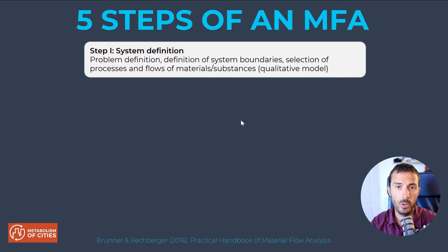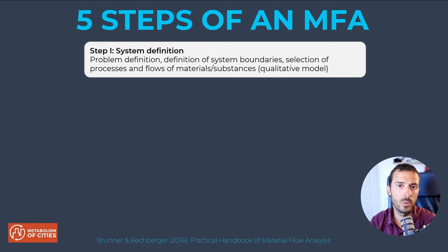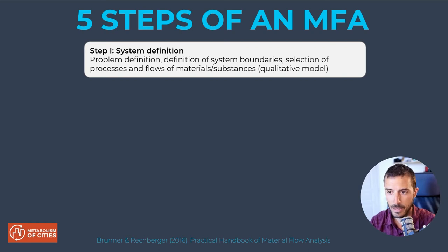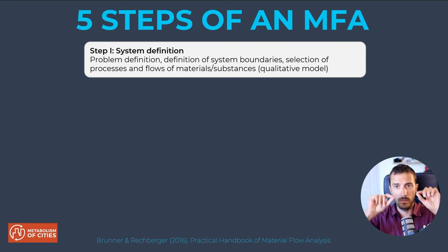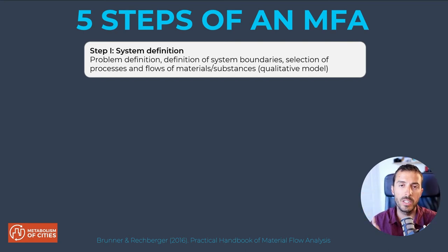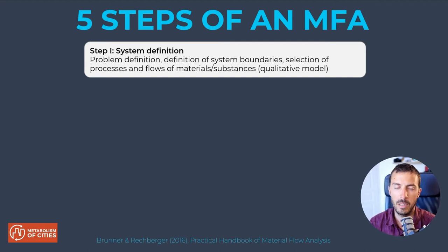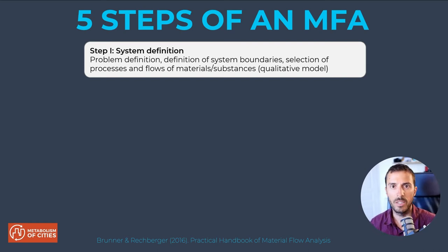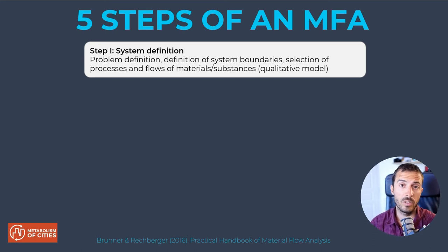The first step is defining the system you want to analyze. When you do a territorial metabolism study or a circularity scan study, you first define in space and time what you will be looking at. In the case of Charlotte in the US, it might be the city, the region, or the metropolis — it could even be a neighborhood. The spatial scale is up to you to define, but you need to define it.